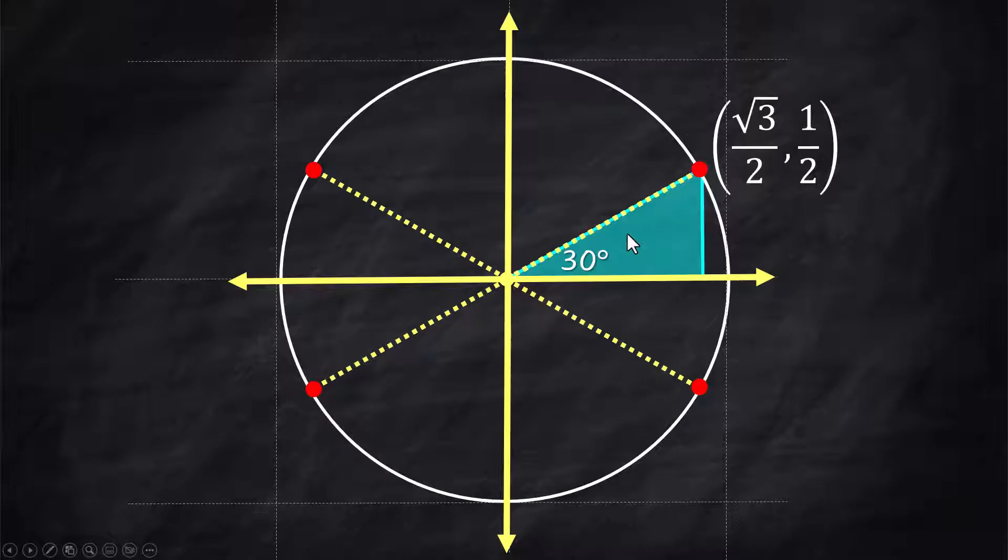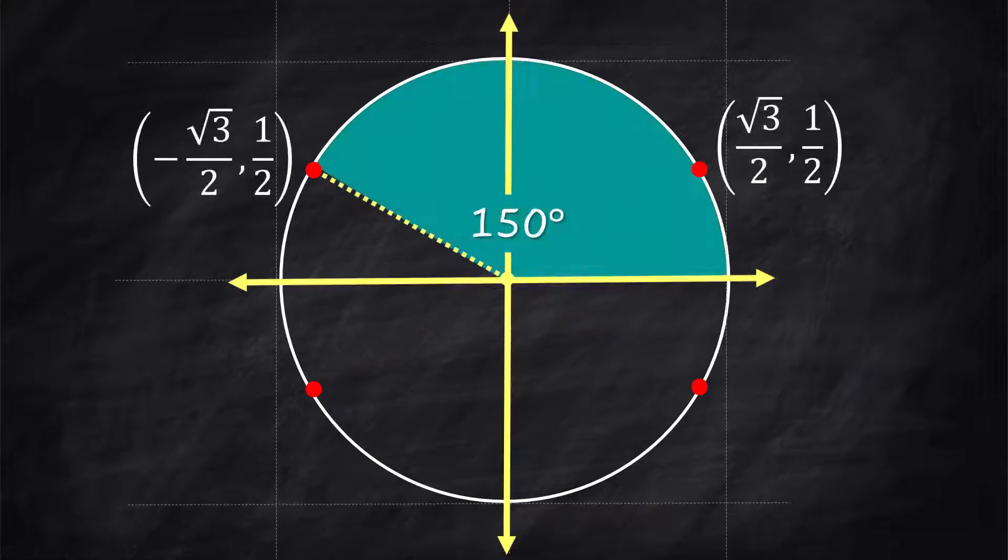Now if you saw the other video, we know that there are four other points on the unit circle that have to do with this 30 degree triangle and there's one in each quadrant. The second quadrant angle is 150 degrees and the coordinates will be the same except that you're going to go backwards on the x and up on the y. So the x is negative, the y is positive, and you just use the same coordinates from first quadrant. You just make the signs what they need to be.